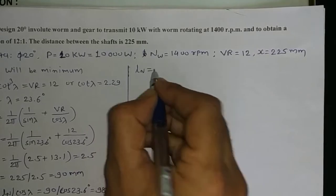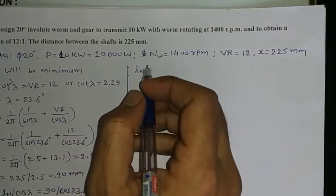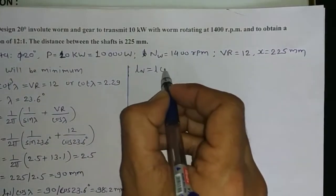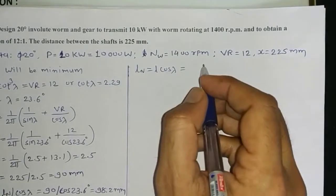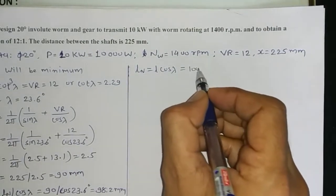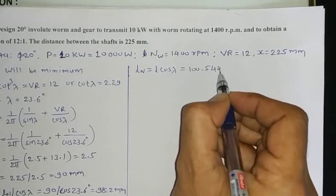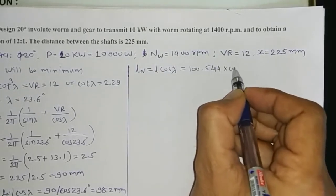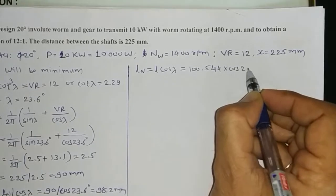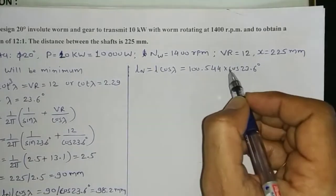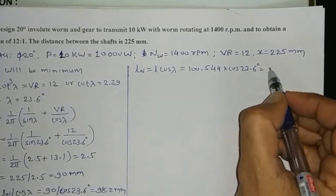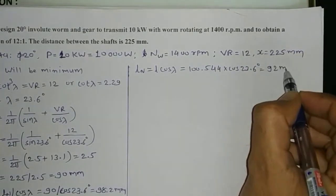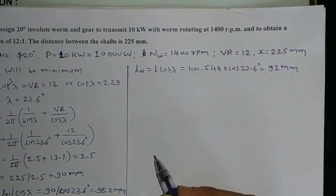The normal lead L_N = L × cosλ = 100.544 × cos(23.6°) = 92 mm.